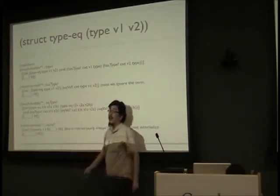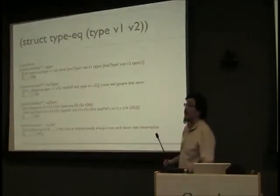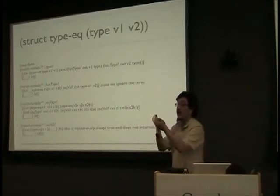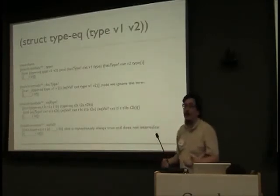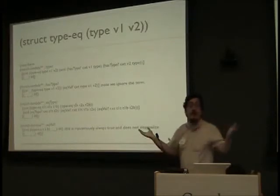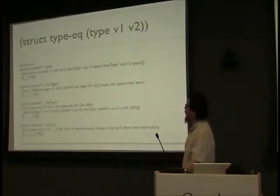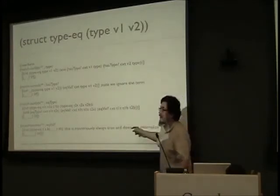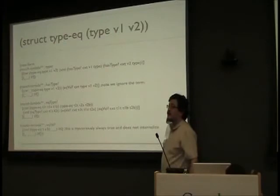I'll say, yeah, the doc's a perfectly fine proof — it's a tautology that one equals one, so any term at all is a proof of it. So we just ignore it. That's bizarre. It's deeply mysterious — definitely not relevance logic.